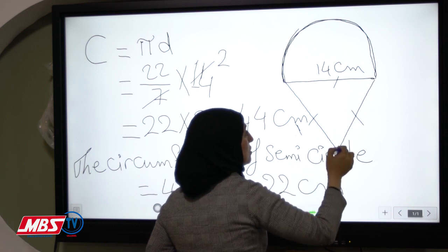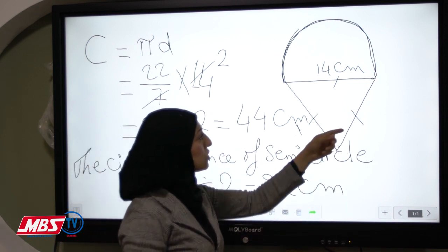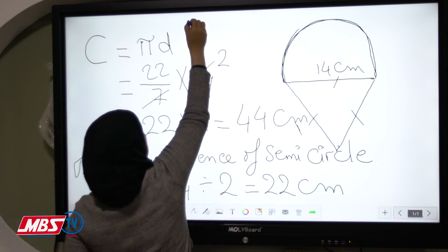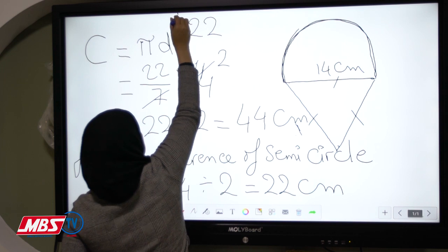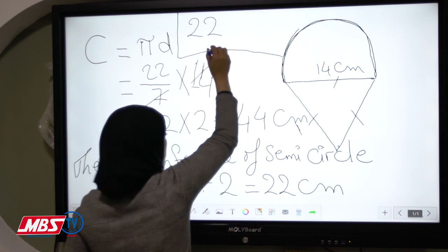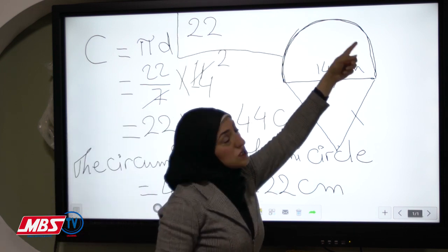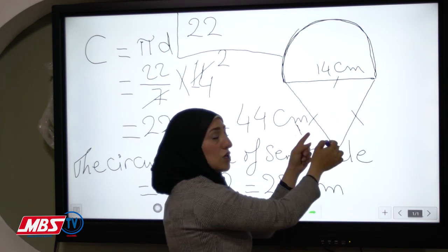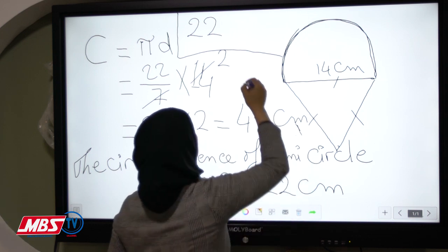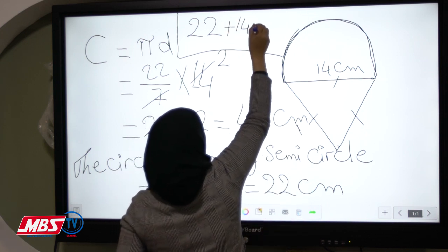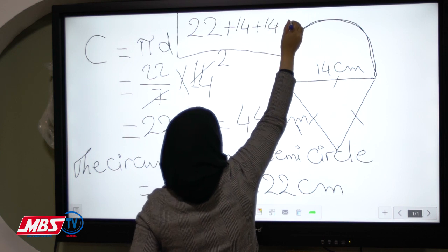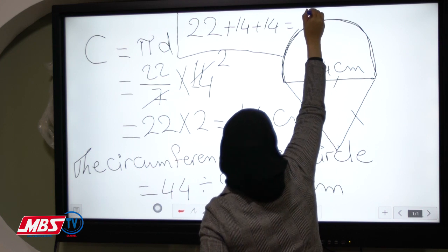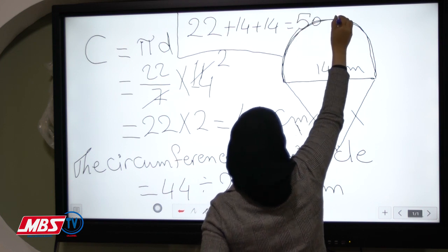What about the rest of the figure? These two straight line segments — this length is 14 centimeters and this side is also 14 centimeters. So the total perimeter will be 22 plus 14 plus 14, which equals 28 plus 22, giving us 50 centimeters. This is the perimeter of the figure.